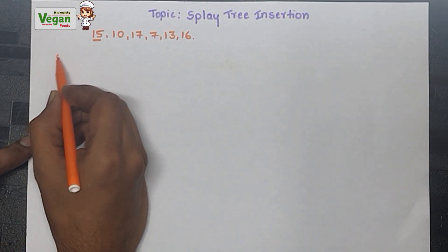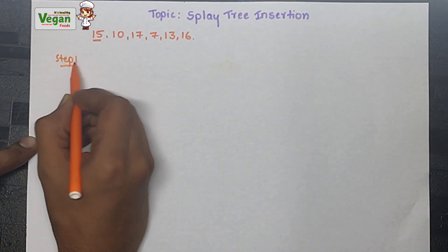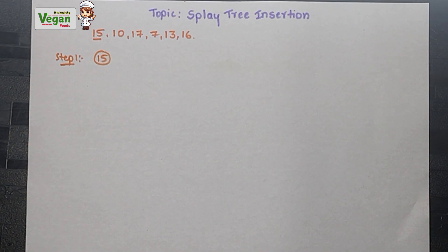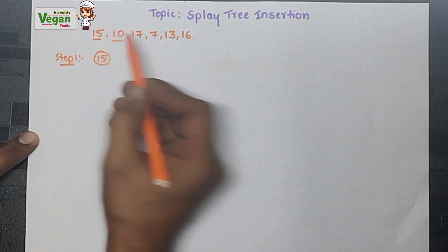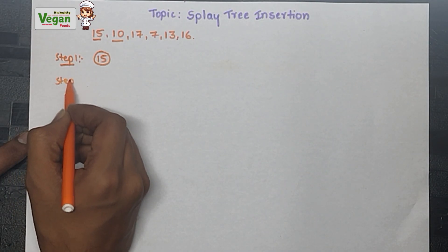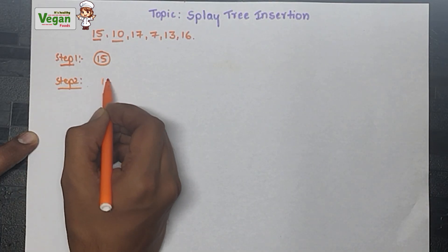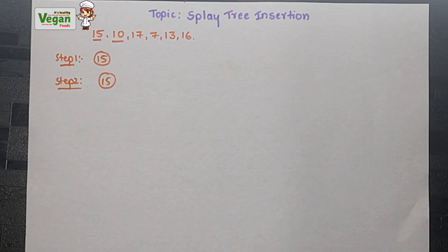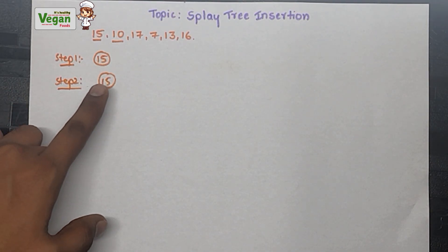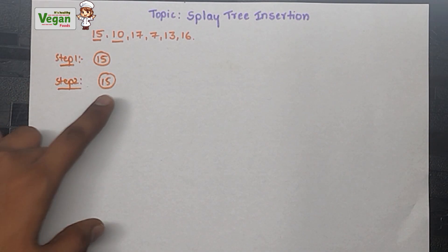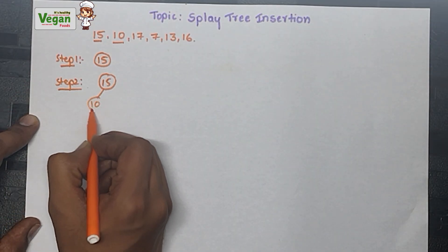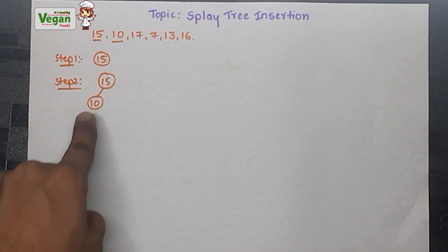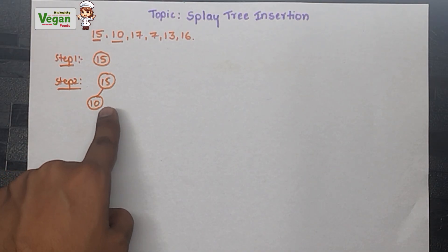So what is the first number? That is 15. Let's consider it as step number one - I am inserting 15, so 15 is the only element. Now in step 2 I must insert 10. First I will compare with 15: 10 is less than 15, so I must draw it to the left side of 15.